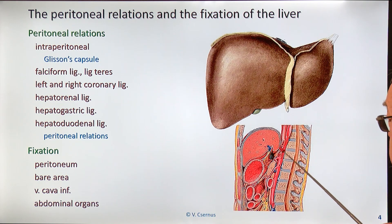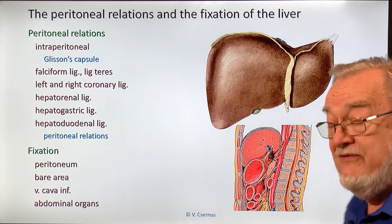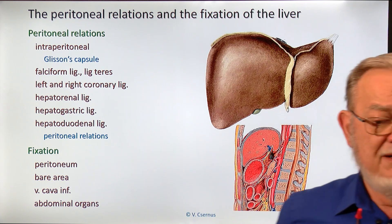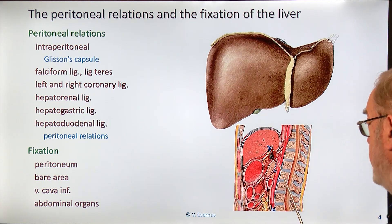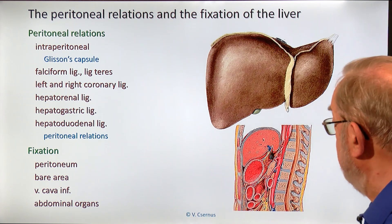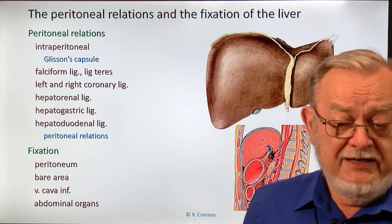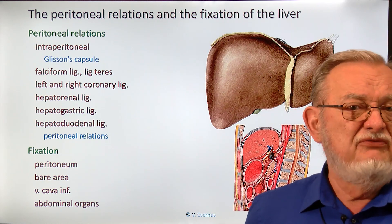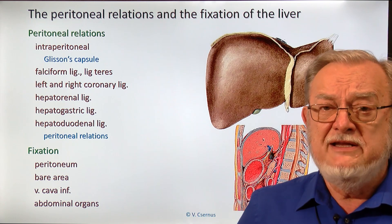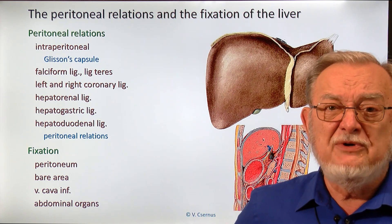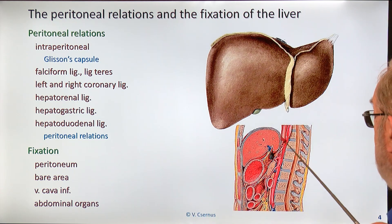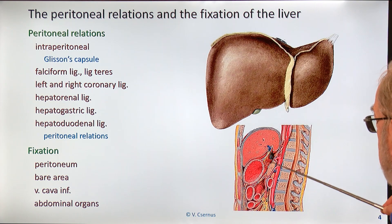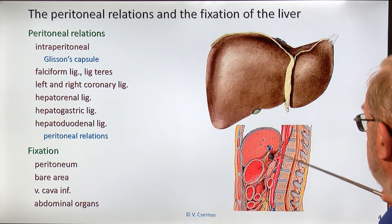The real fixation is performed, interestingly, by the abdominal organs themselves. Although the abdominal organs are soft, when the abdominal muscles contract they form a kind of pillow-like structure that very efficiently supports the liver. You can experience this yourself: if you jump down from half a meter and place your hand on your abdomen, you feel a reflexive contraction of the muscles on landing. This reflex compresses the abdominal organs and protects the liver — those who lack this reflex have a limited chance of survival in such scenarios.